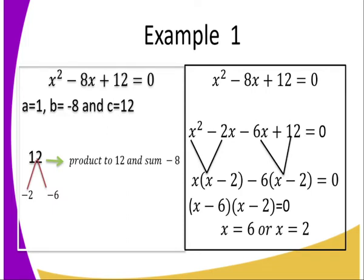And then, after that, using the grouping method, we factorize. The common between the first two is X, so you get X(X minus 2). And the common in the second is negative 6, so you still get X minus 2 in bracket.